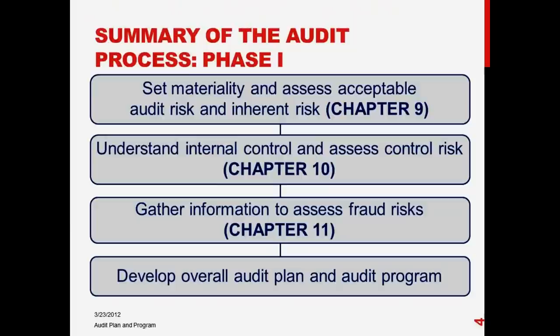Remember in Chapter 9 we talked about determining materiality. Materiality is the amount — it's a judgment — the amount that would alter a reasonable person's actions, that would make a difference to a reasonable person. That's the definition of materiality from a financial statement perspective. We determine materiality both quantitatively and qualitatively. Initially, in Chapter 9, we set materiality quantitatively based on some factor such as net income, operating income, or total assets, driven by the characteristics of that company.